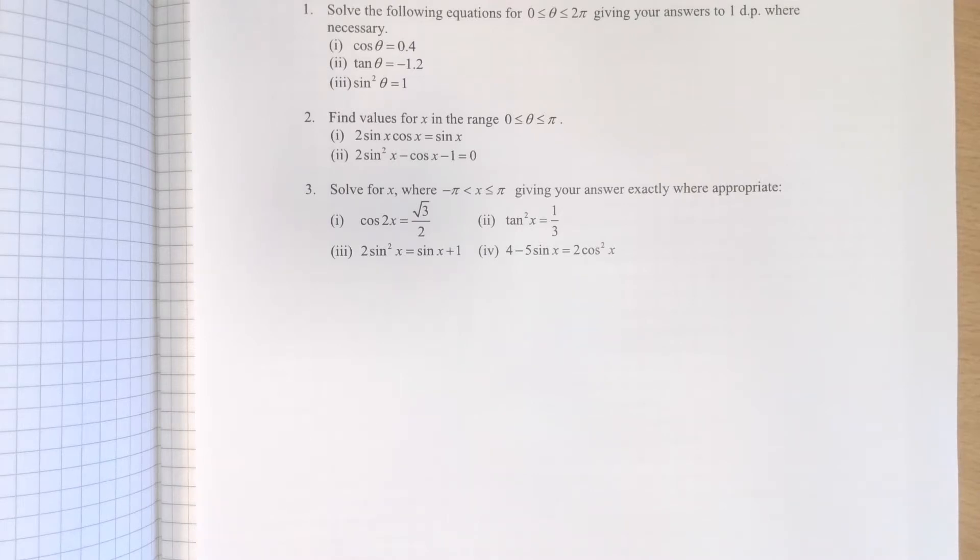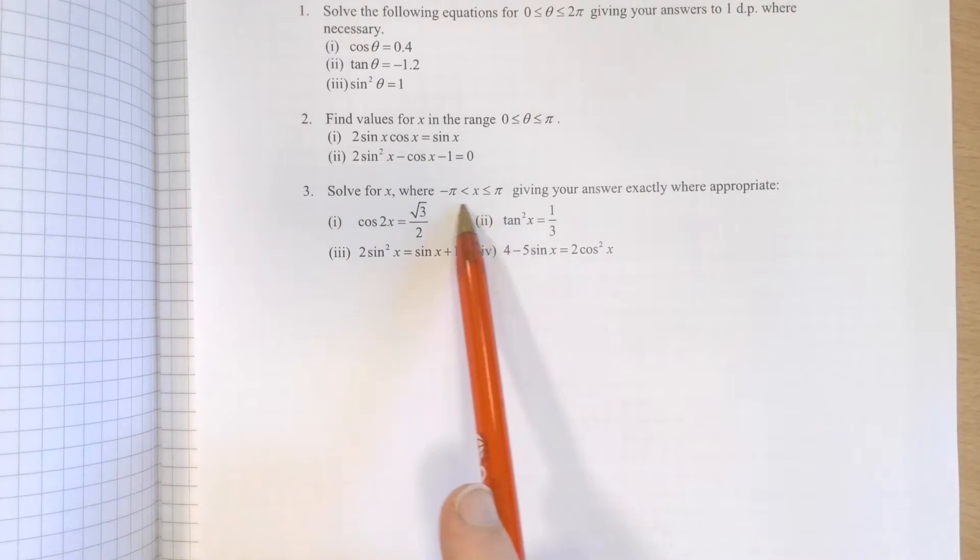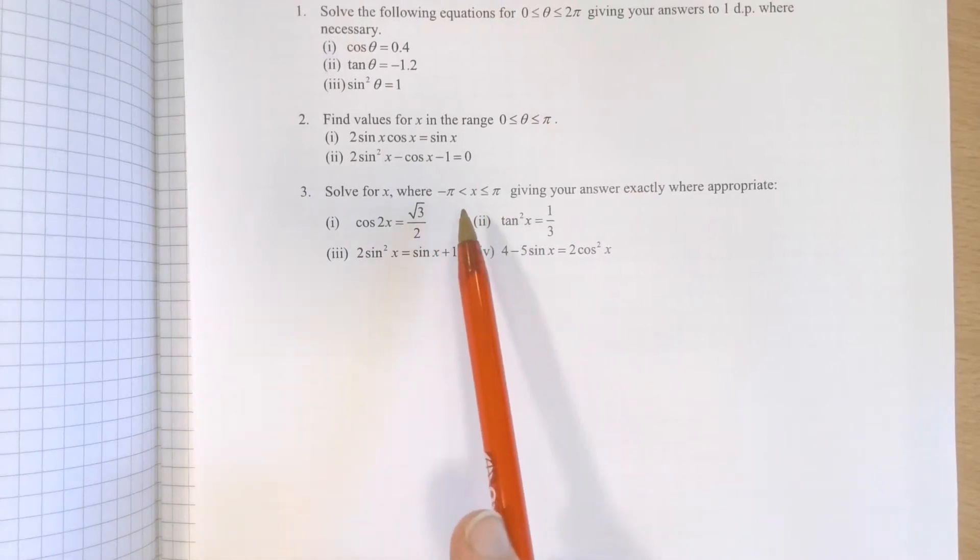This is a question set on radians and specifically solving trigonometric equations in terms of radians. The fundamentals are pretty straightforward, but when I start looking at these ranges of values here, things get a little bit trickier.